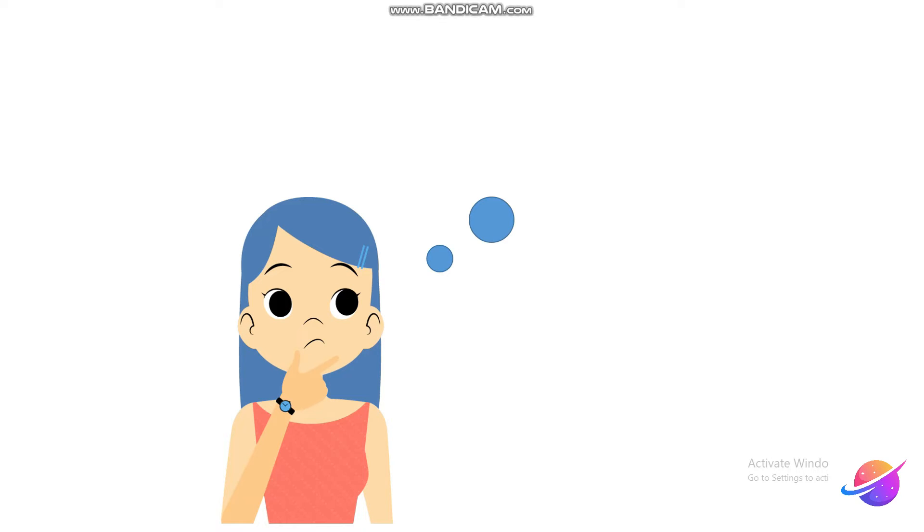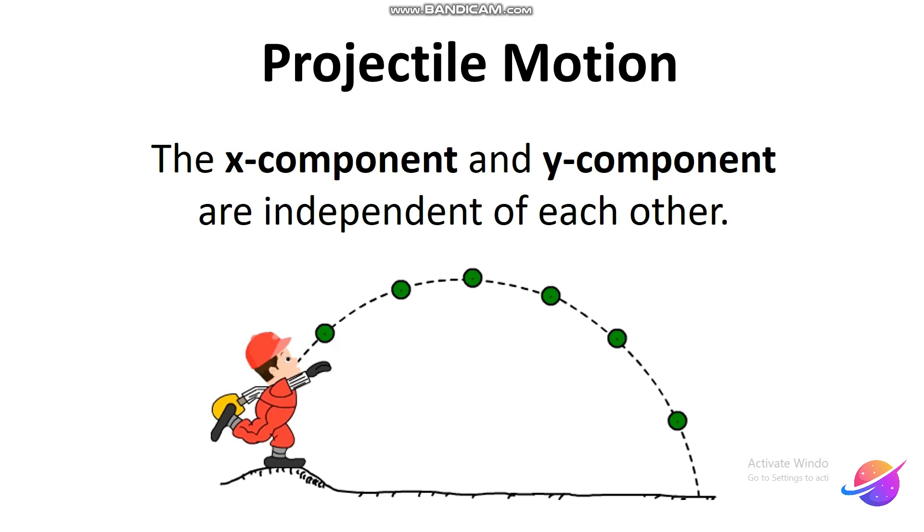Why is it so? It is because in projectile motion, the x and the y-axis are independent of each other.